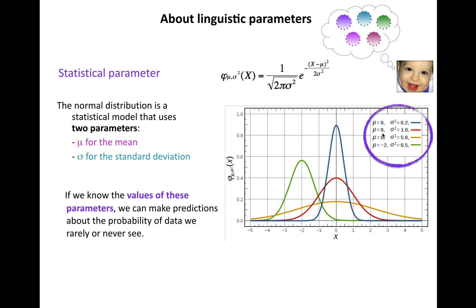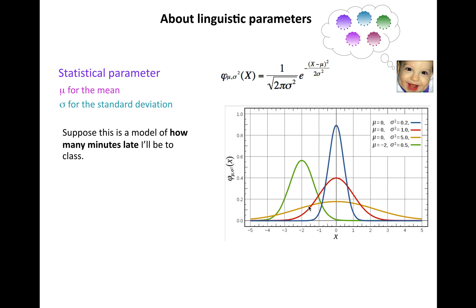If we know the values of these parameters, we can make predictions about the probability of data we haven't seen before or that we rarely see. Let's think about this concretely as a model of how many minutes late I'll be to class. Let's use the model where μ = 0 and σ² = 0.2.